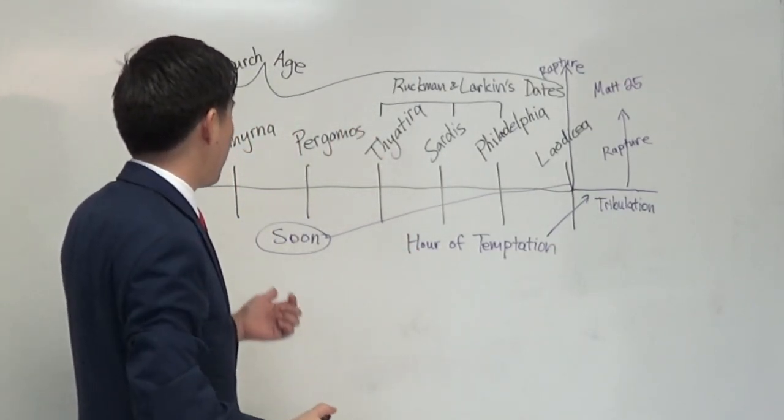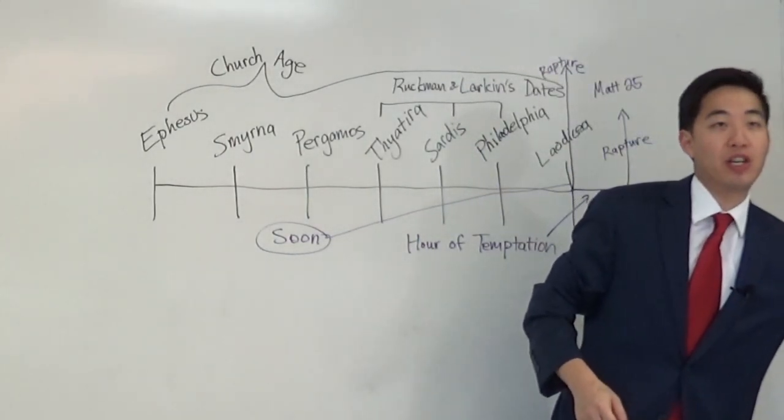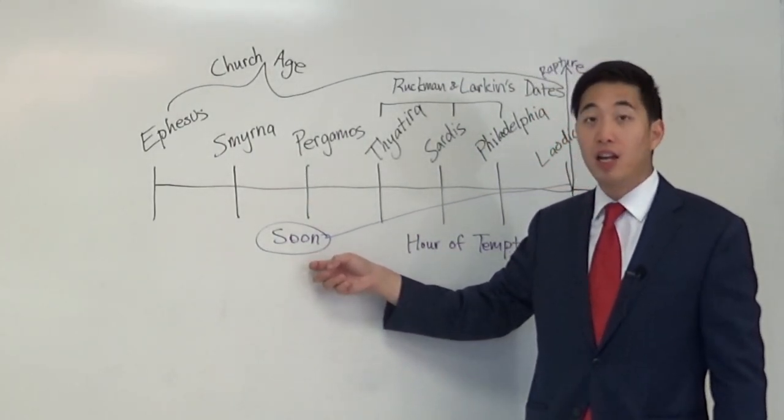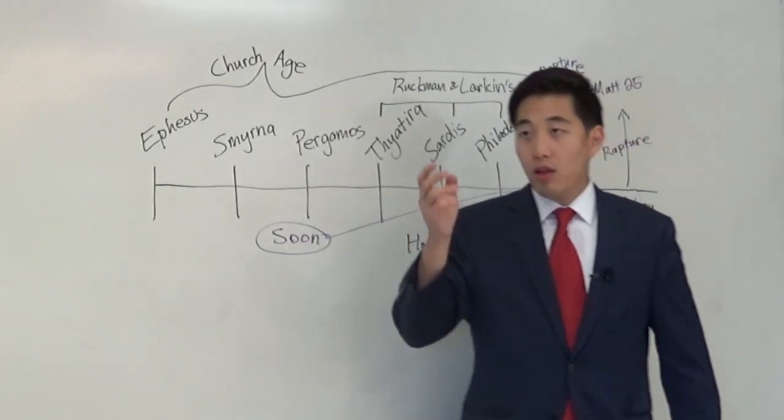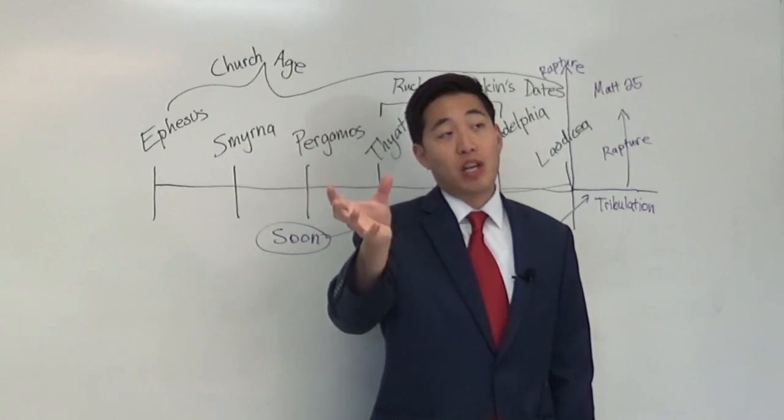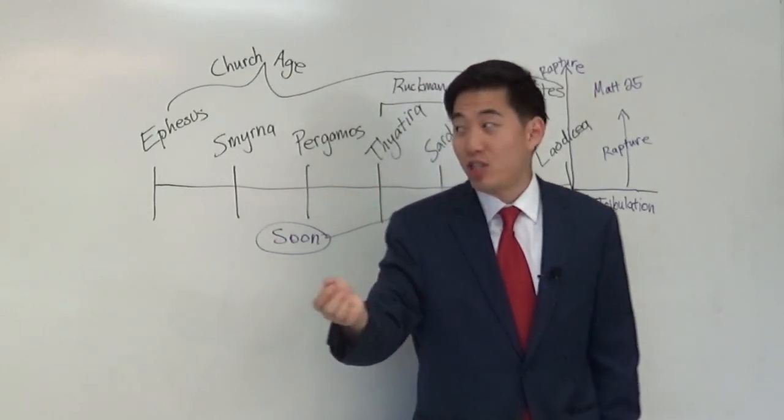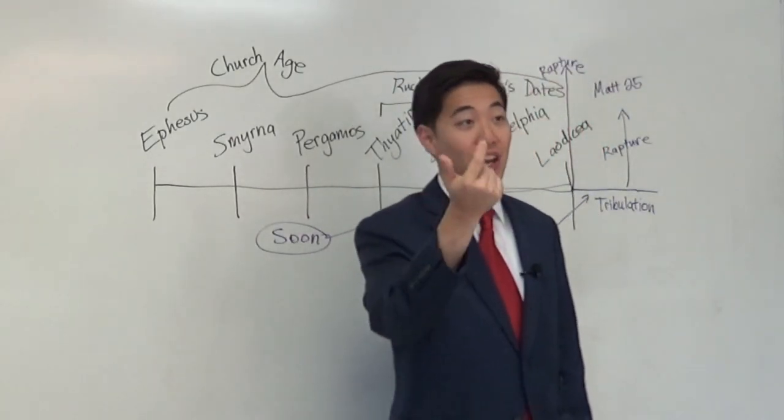Remember, I showed you 2 Peter 3. A day with the Lord is 1,000 years, as 1,000 years is one day. Because to God's eyes, it is very soon to Him. You've got to realize this. He lived eternally. There was no beginning. So 2,000 years is just a blink of an eye to Him.